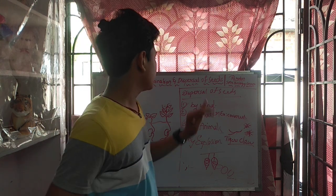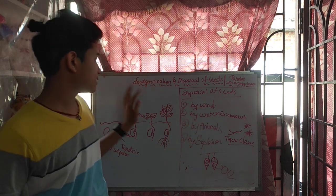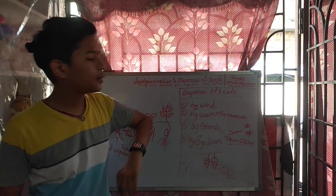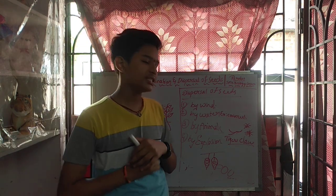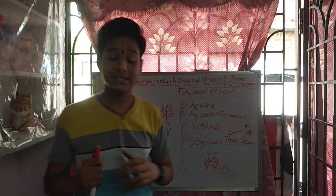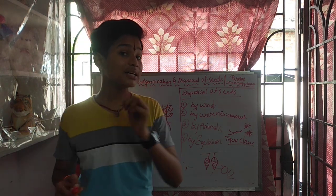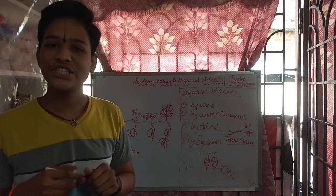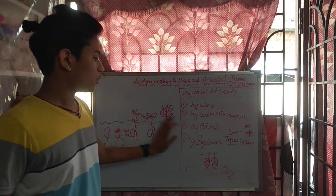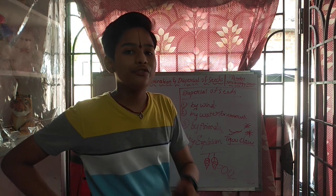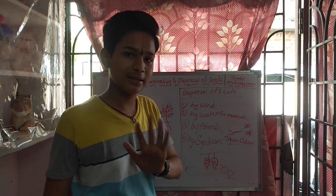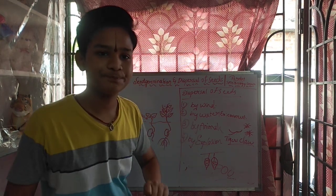Today's session on seed germination and dispersal of seeds is completed. Please like, share, and subscribe to our channel SMS Biology Classes. Today's question is: what is the first part that comes out from the seed? Thank you and bye.